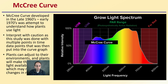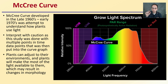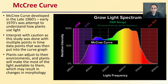Looking at the general McKee curve, it was developed in the late 1960s to early 1970s as an attempt to understand how plants utilize light. Interpret this with caution, as the study was done with multiple data points put into a curve on a graph. Plants can adjust to their environments and will make the most of the light available to them, which may result in changes in their morphology. This is just a suggested curve giving an idea of how plants may utilize the light spectrum.